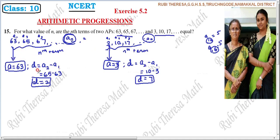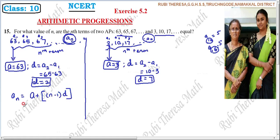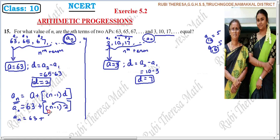If we find the Nth term formula for each sequence, we can easily solve this. The Nth term formula is: An equals A plus (N minus 1) into D. For the first sequence, An equals 63 plus (N minus 1) into 2. Multiplying inside: 2 into N is 2N, and 2 into minus 1 is minus 2. So An equals 63 minus 2 plus 2N, which gives An equals 61 plus 2N.